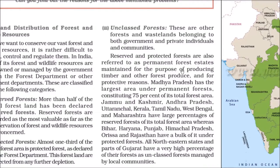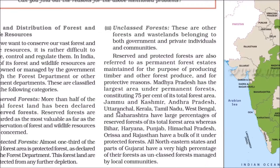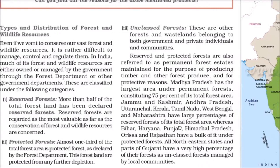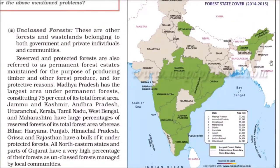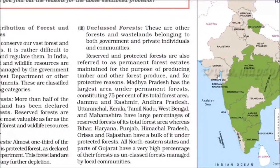Madhya Pradesh has the highest percentage of permanent forest at 75%. Jammu & Kashmir, Andhra Pradesh, Uttarakhand, Kerala, Tamil Nadu, West Bengal, and Maharashtra have large percentages of reserve forests. Bihar, Haryana, Punjab, Himachal Pradesh, Odisha, and Rajasthan have mostly protected forests. Gujarat and the northeastern states have high percentages of unclassed forests managed by local communities.